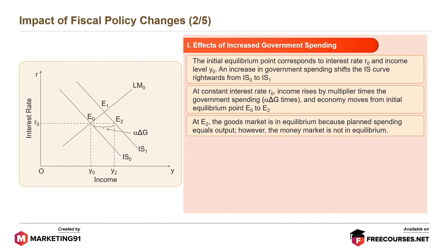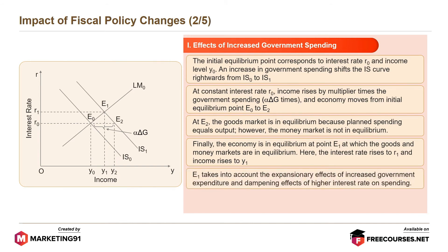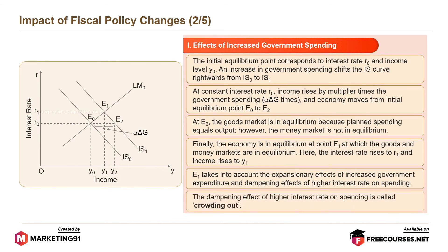However, the money market is not in equilibrium. Finally, the economy is in equilibrium at point E1, at which goods and money markets are in equilibrium. Here, the interest rate rises to R1 and income rises to Y1. E1 takes into account the expansionary effects of increased government expenditure and the dampening effects of higher rate of spending. This dampening effect of higher interest rate on spending is called crowding out.